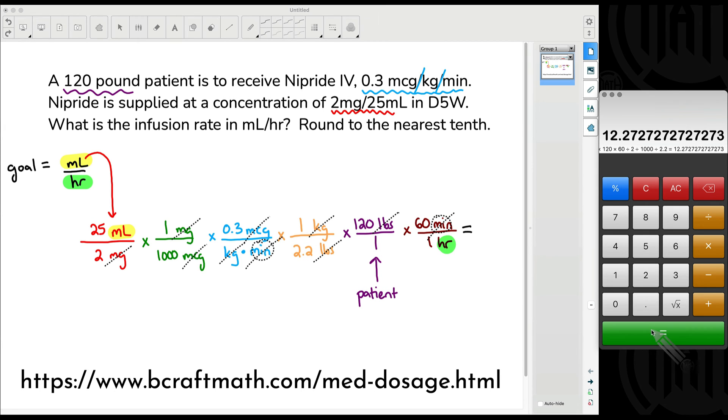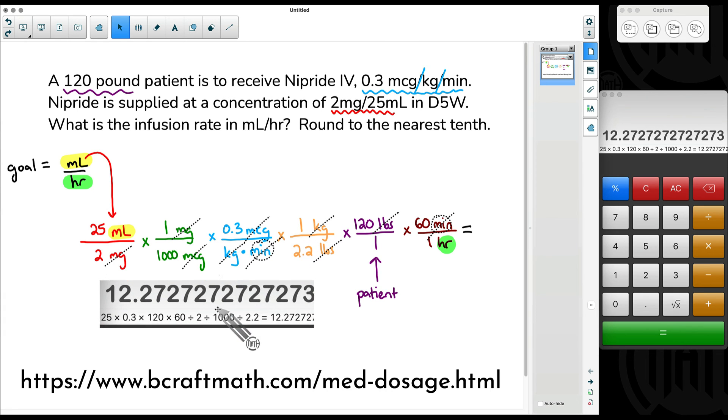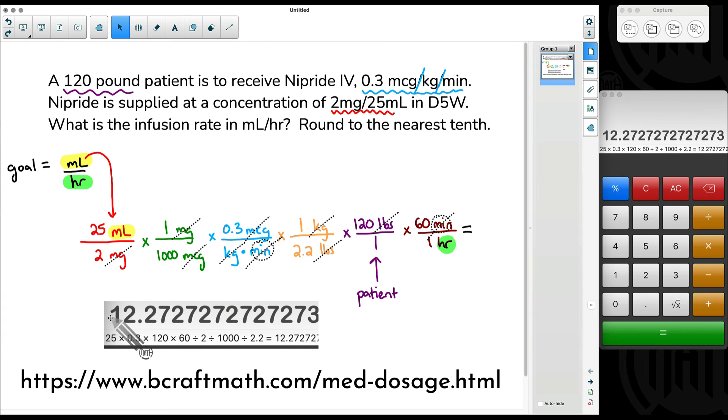Finally, I press equals one time. And the answer we get on our calculator, 12.27 repeated. Our problem says to round to the nearest tenth. Make sure to pay attention to your particular program's rounding rules. But rounding 12.27 to the nearest tenth, the 7 tells that 2 to go up to a 3. Therefore, our answer is going to be 12.3 milliliters per hour. This is our final answer to this long med dosage problem.